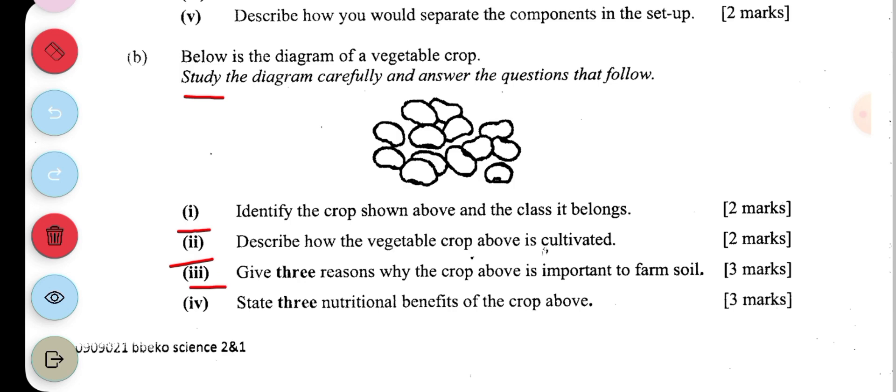And the next one is state three reasons why the crop above is important to farm soil. It's important to farm soil because it adds nitrogen to the soil. It also controls soil erosion. It improves the soil structure.